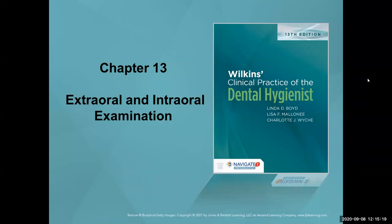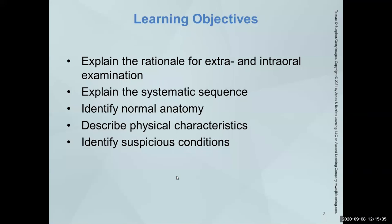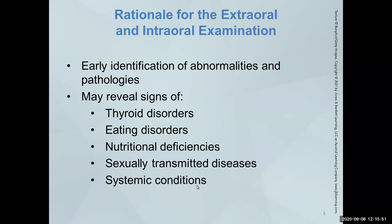Today we're discussing Chapter 13 of the Wilkins, which is the extra-oral and intra-oral examination — we call it the EOIO. You'll see that abbreviation. We've got the learning objectives — hint hint — because that is what you need to know for the exam. Why are we doing an intra-oral and extra-oral cancer exam? I call it the OCE — that's how I grew up — for oral cancer exam.